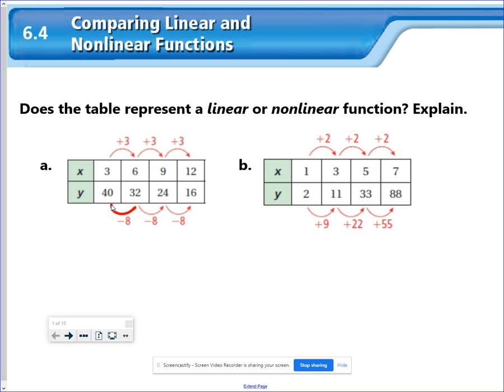The change in y is decreasing by 8 every single time and the x's are increasing by 3. So decrease by 8 every single time, increase by 3, that means the constant rate of change, the slope, would be negative 8 thirds.